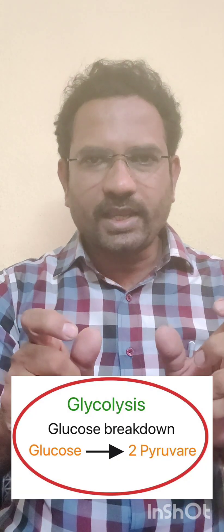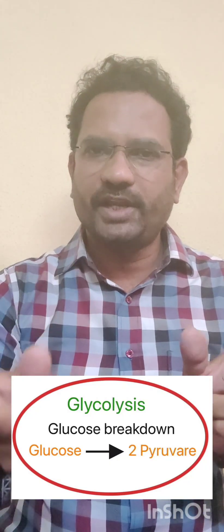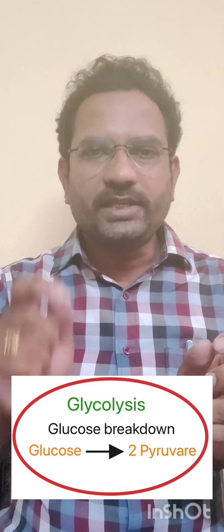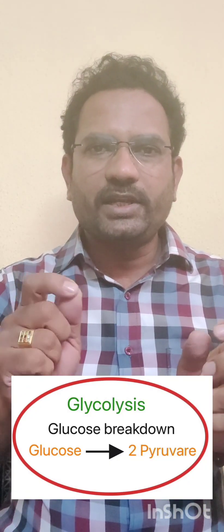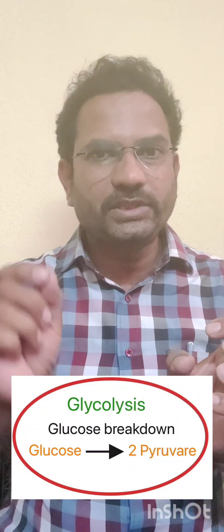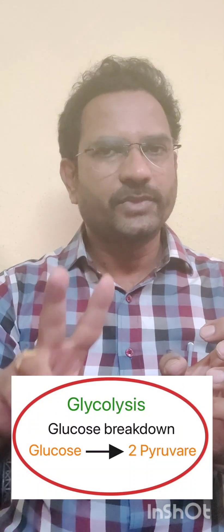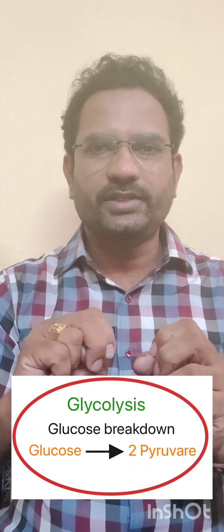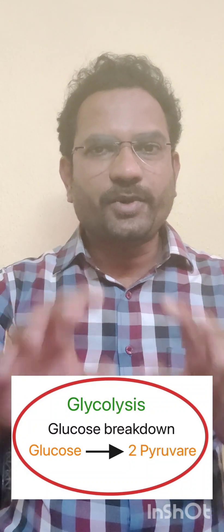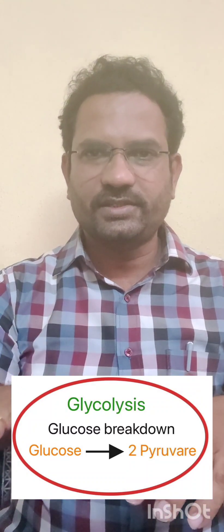Glycolysis — 'glyc' means glucose, 'lysis' means breakdown. A six-carbon containing glucose breaks down into three-carbon containing pyruvates — two pyruvates. This process is called glycolysis.